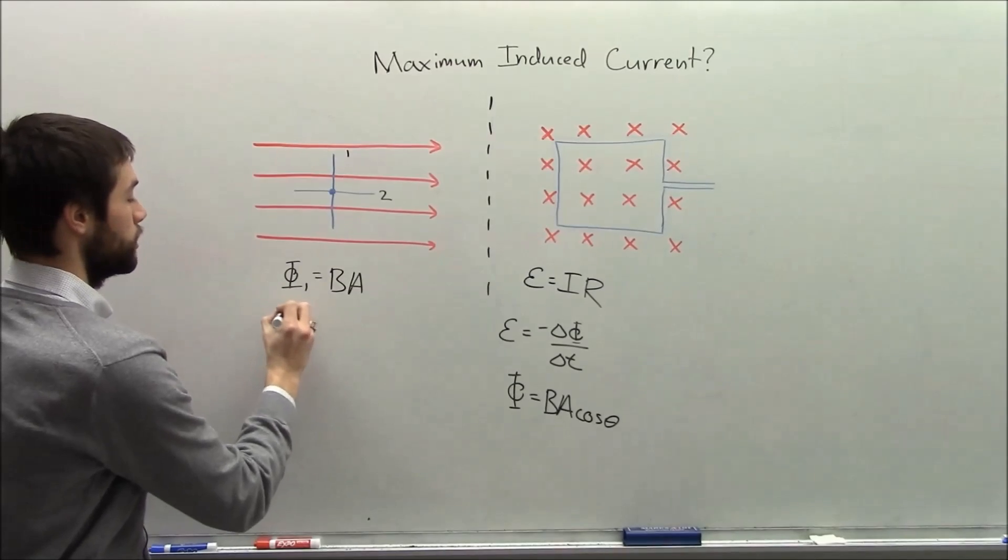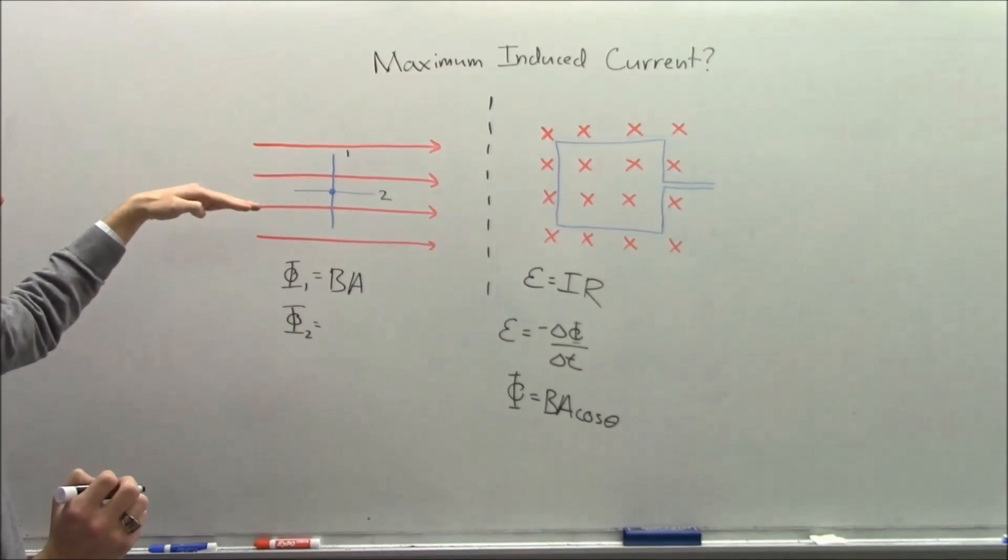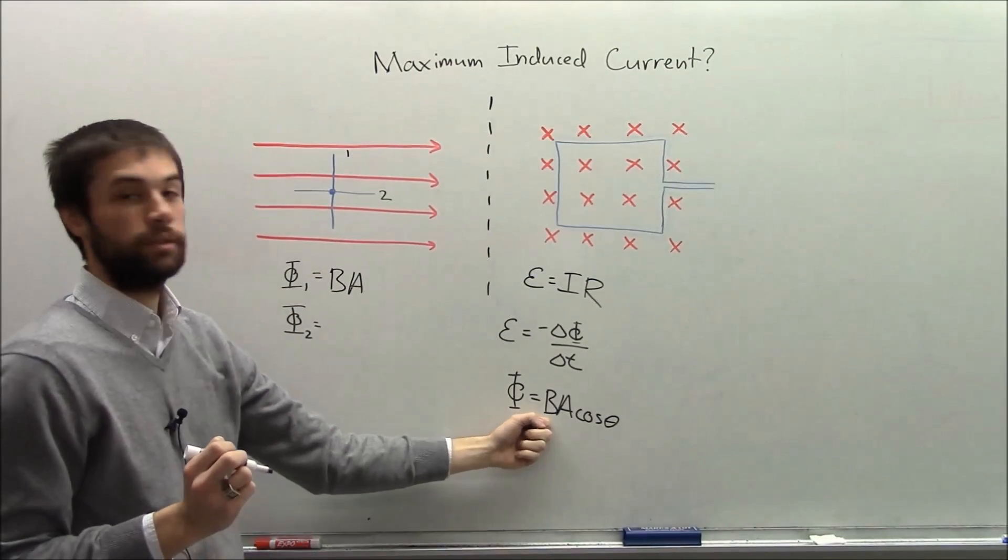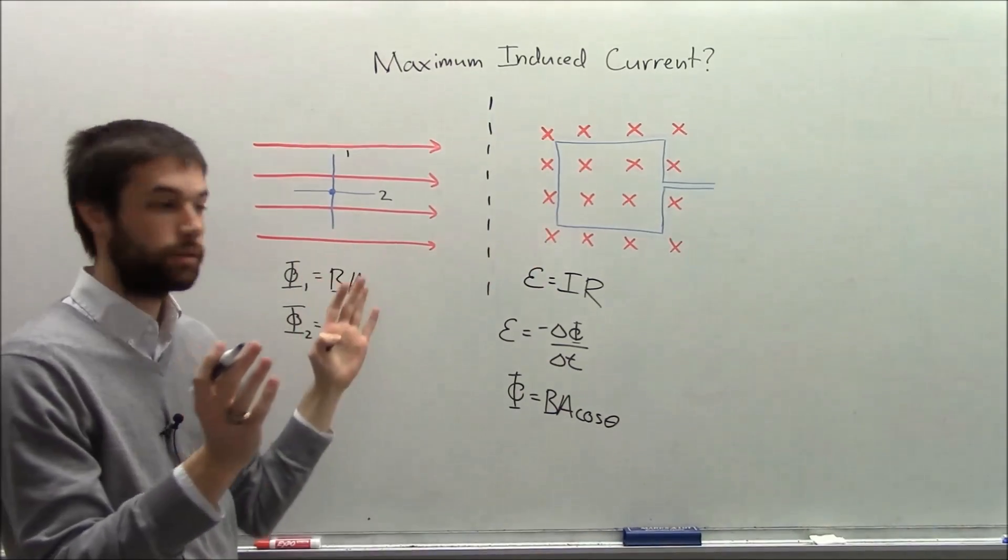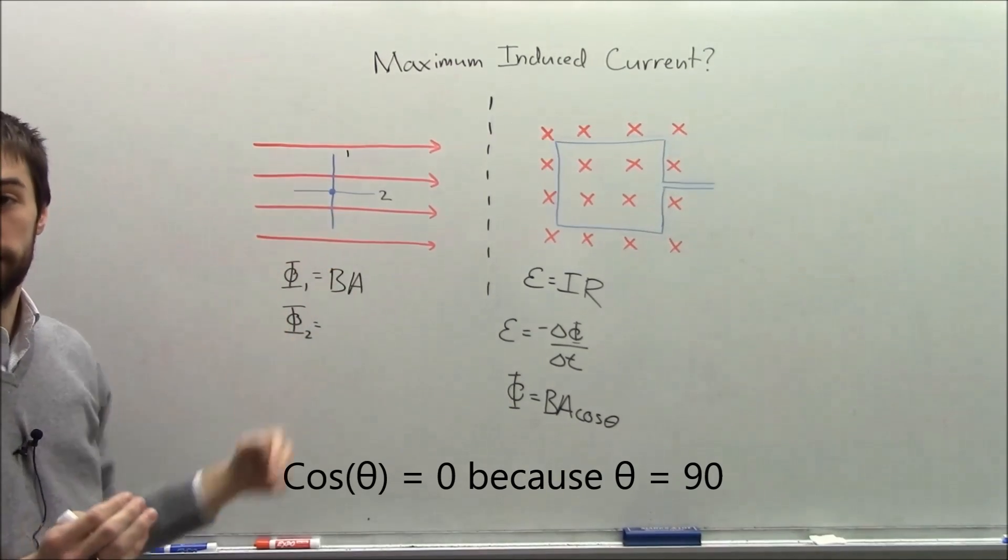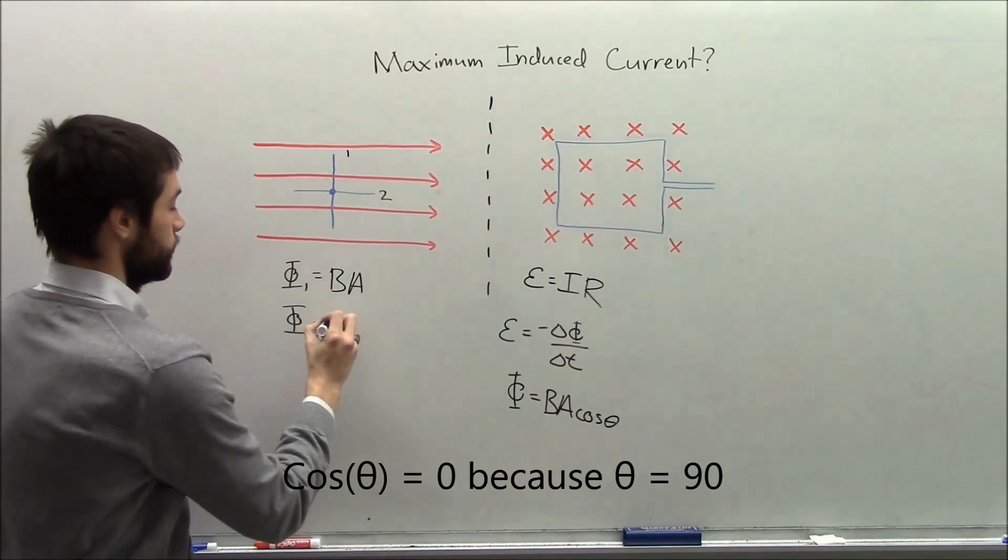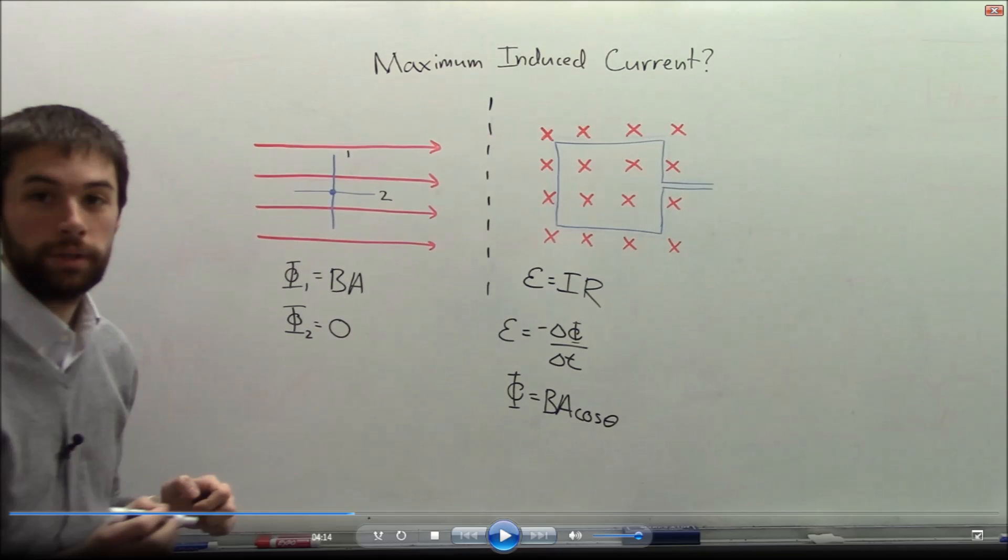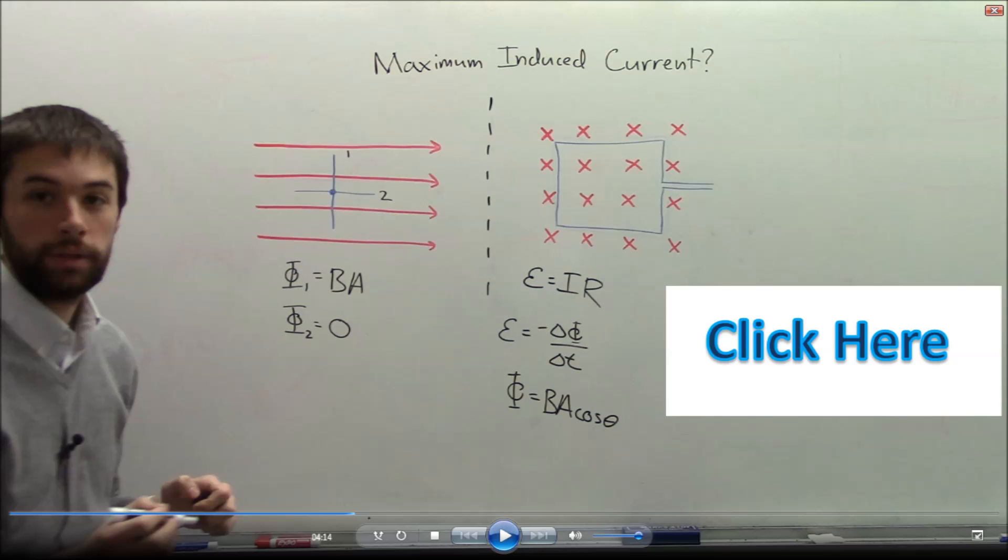What about in position two? Well in position two we have the full magnetic field, we have the area, but the cosine of θ is now zero because θ is 90, so we get zero. In case anyone is confused or unsure about how Dylan knew that θ was equal to zero or 90 and what cos θ was equal to, just check out the additional video linked in the description down below where Dylan explains it in just two minutes. You can also just click here.